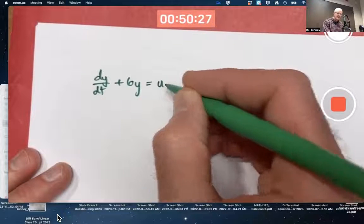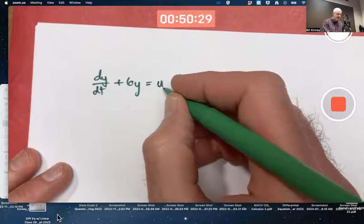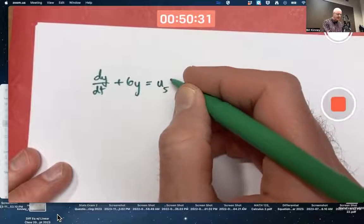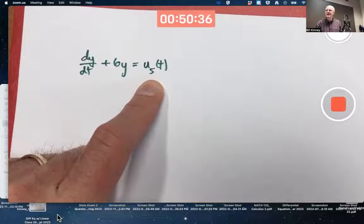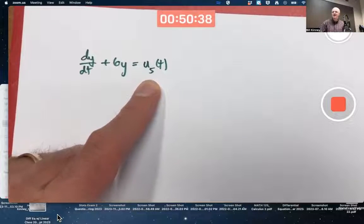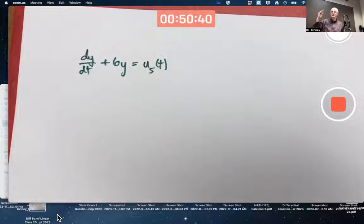The notation is to call it u sub, say, oh, I'll pick 5 of t. What's u sub 5 of t? It's a forcing function that essentially represents turning on a light switch, or maybe hitting a mass with a hammer. Well, no, not quite. That's a bad analogy. Turning on a light switch in an electric circuit, so to speak, is the best analogy here.